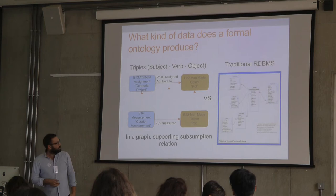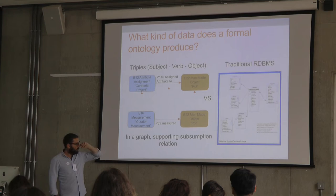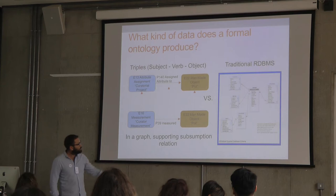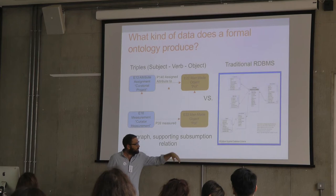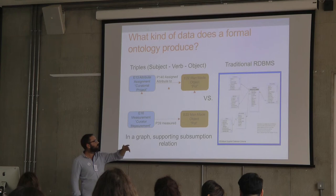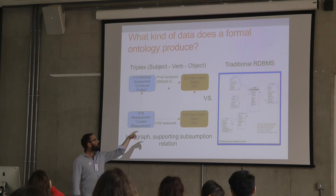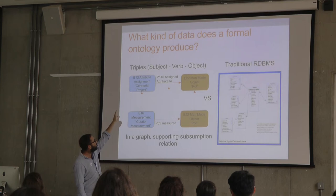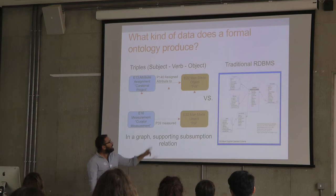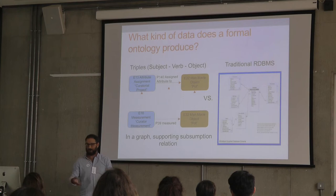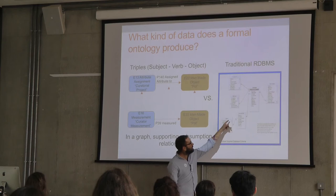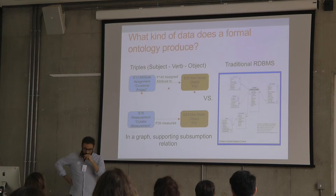CIDOC CRM makes triple patterns of information. Rather than a traditional database format, we have something that looks akin to many sentences, which undergirds the notion of semantic data being human-readable and machine-processable. Even though this looks a little abstract, this is a CIDOC CRM sentence which says: there is an attribute assignment, which was an event of the curatorial project, that assigned an attribute to a pot. By the end of two days, that should become a relatively natural thing to read — and it's somewhat more self-explanatory than a set of tables.